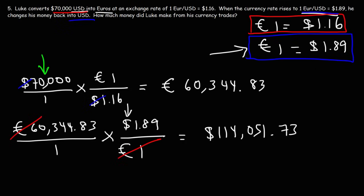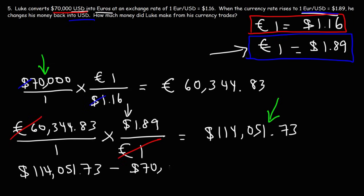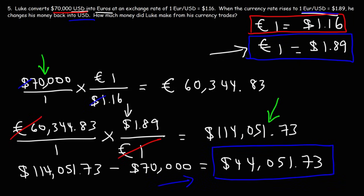Luke started with $70,000 in US dollars, and after his two currency trades he now has $114,051.73. The amount of money he made is the difference between the two: $114,051.73 minus $70,000 equals $44,051.73. That's how much money Luke made from his currency trades. Now you know how to convert from one currency into another — thanks for watching.